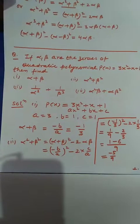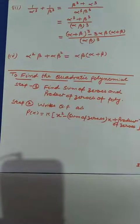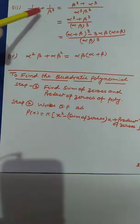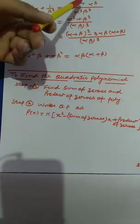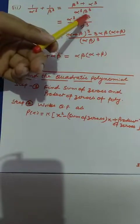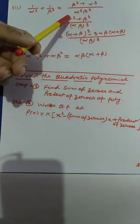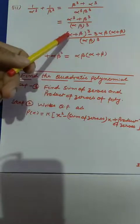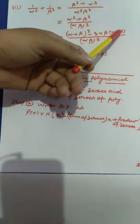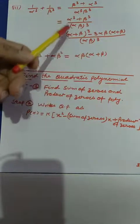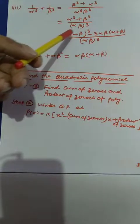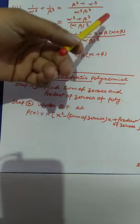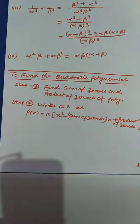Similarly, for 1/alpha³ plus 1/beta³, taking the LCM gives alpha³·beta³ in the denominator, so the expression becomes (alpha³ plus beta³) divided by (alpha·beta)³. Using the identity alpha³ plus beta³ equals (alpha plus beta)³ minus 3·alpha·beta·(alpha plus beta), I can replace the values of alpha plus beta and alpha·beta to compute the final answer.